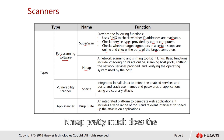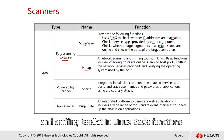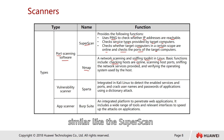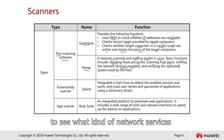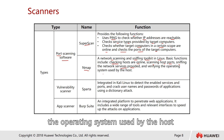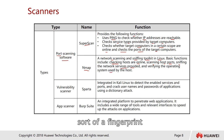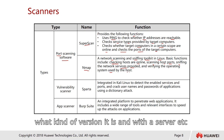Nmap does similar things but is primarily designed for Linux operating systems. It is a network scanning and sniffing toolkit for Linux. Basic functions include checking whether hosts are online, scanning host ports, sniffing network services provided, and verifying the operating system used by the host using fingerprint identification — for example, whether the machine is running Linux or Windows and which version.